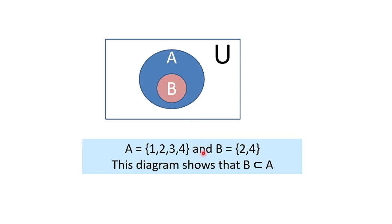We also have here the diagram showing that B is a proper subset of A. As you can see, the elements of B — which are 2 and 4 — can be found in A. And there is at least one element in A that is not in B, which are 1 and 3. Therefore, B is a proper subset of A.